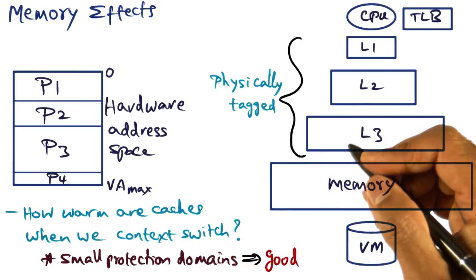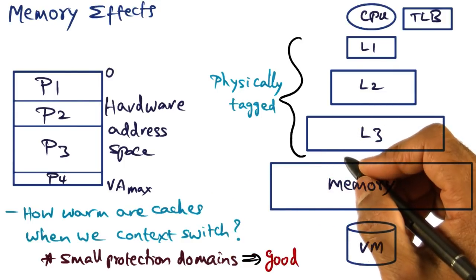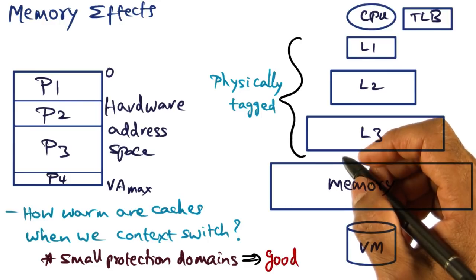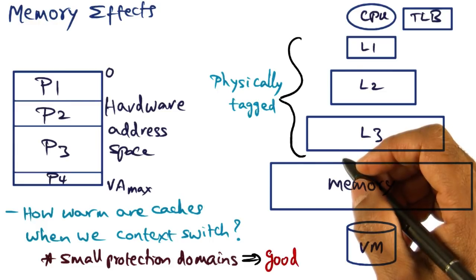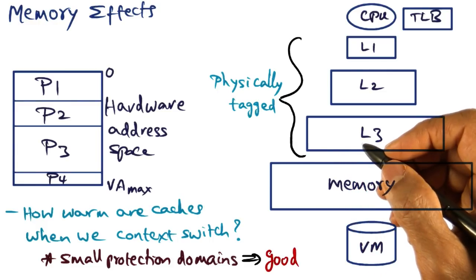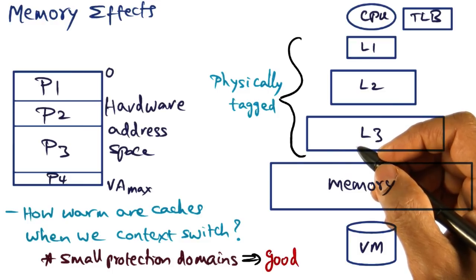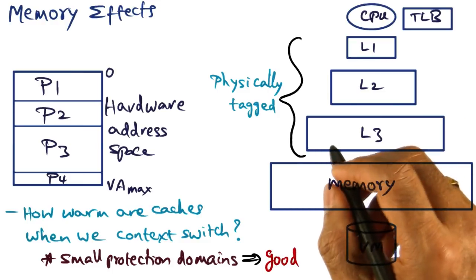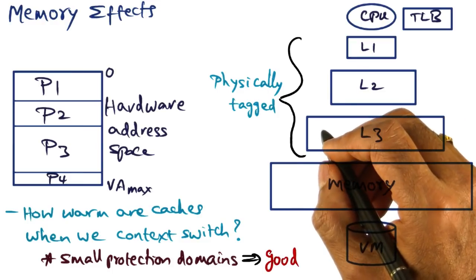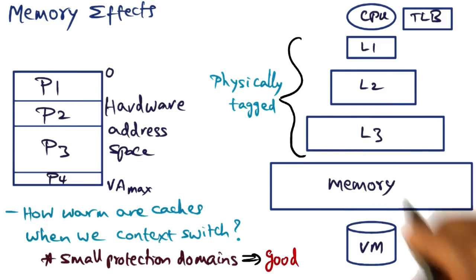So this begs the question, why was it so bad in Mach? Recall I mentioned that in Mach, on the same hardware, border crossing cost 800 more cycles compared to the border crossing in the L3 microkernel. So we can ask the question, why was it so bad in the Mach microkernel?